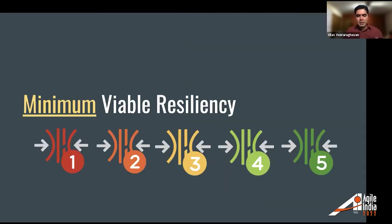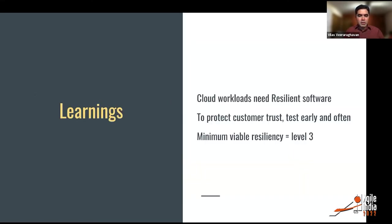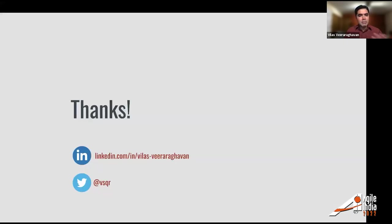In conclusion: as many of you may have rightly identified, level three is the level I suggest as minimum viable resiliency for teams wanting to practice a resiliency model — that is where the investment has the most ROI. The key learnings I want to share: cloud workloads need resilient applications and services. If you really want to protect customer trust, you have to test early, test often, fail fast, and learn fast. Based on my experience working with hundreds — maybe thousands — of teams over the last decade, minimum viable resiliency is level three.